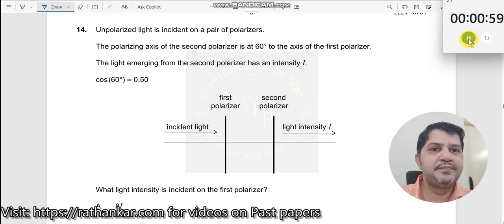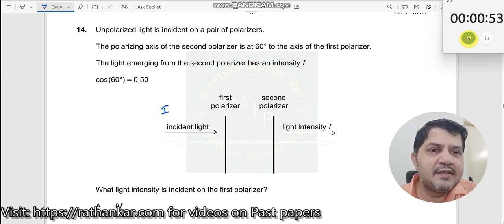Question number 14: An unpolarized light is incident on a pair of polarizers. So here unpolarized light is incident.